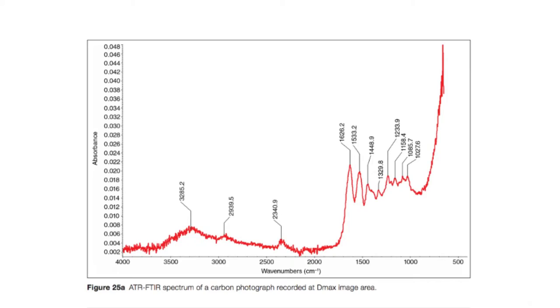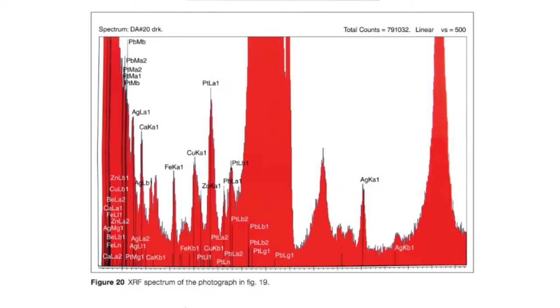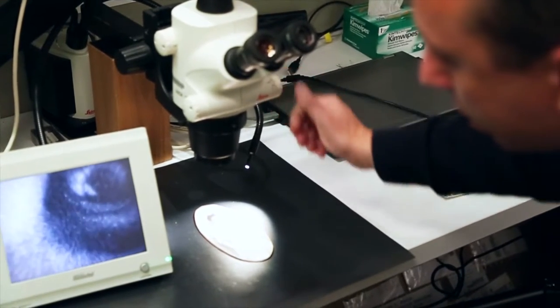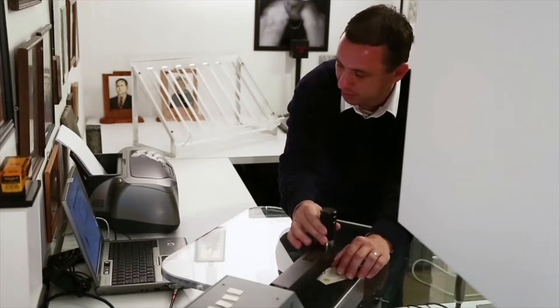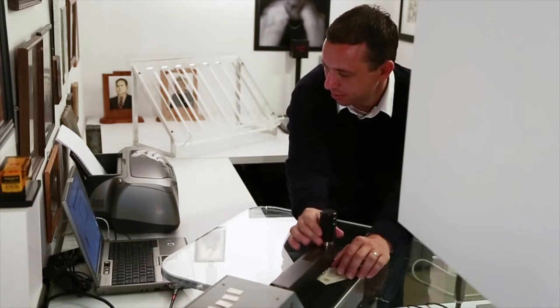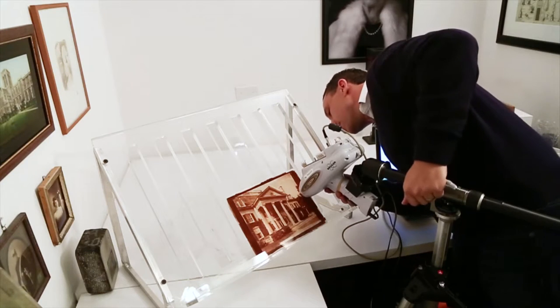In the opening of the atlas we talk about the instrumentation we use for our analysis. We use a series of scientific techniques including microscopy, x-ray fluorescence analysis, and Fourier transform infrared spectroscopy to really identify the chemical and elemental makeup of a photograph.